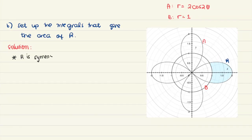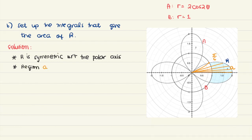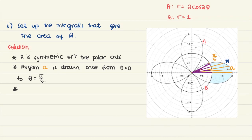For the area of R, we again use symmetry with respect to the polar axis and split the region in half. The rose can be drawn from 0 to pi over 6, covering the part we called segment A. That region can be drawn from 0 to pi over 6. The corresponding part of the circle — let's call it region B — is also drawn from 0 to pi over 6.